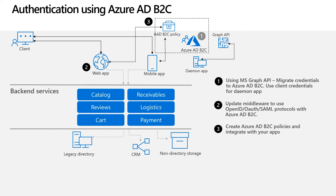By using Azure AD B2C directory, we now have no dependency on the on-prem legacy directory. As a final step of this migration, we will remove this on-prem legacy directory. Harsh, it is common for our customers to have both on-prem applications and SaaS applications integrated with Azure AD B2C. What do you recommend for such integrations?